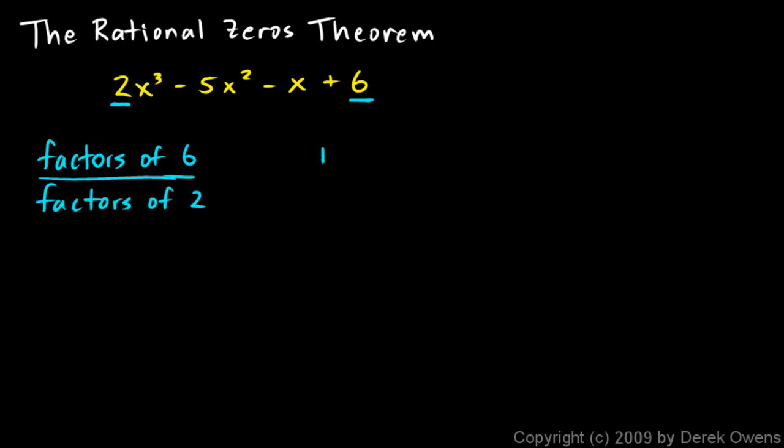So let's think about the factors of 6 real quick. That's easy. 1, 2, 3, and 6. Those are the factors of 6. And we could have positive or negative and divide those by factors of 2, 1 or 2. So let's make a list of all the possible fractions we could make by using one of these numbers over one of these numbers.